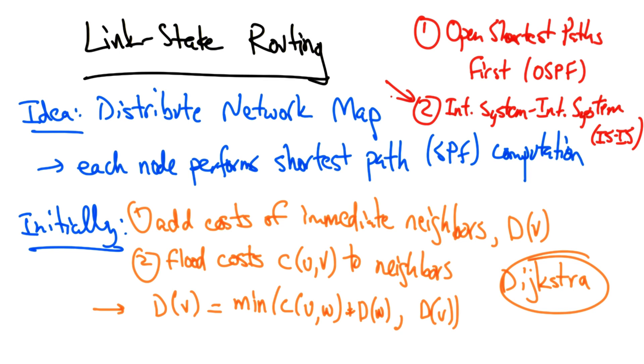In recent years, ISIS has gained increasing use in large internet service providers and is the more commonly used link state routing protocol in large transit networks today.